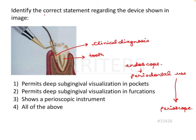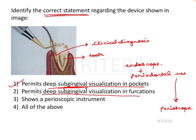Now let's see the options — what are the correct statements? Option one: it permits deep sub-gingival visualisation in pockets. In the image itself they are visualising the pocket sub-gingivally, so this is definitely correct. Option two: permits deep sub-gingival visualisation in furcation. If this were a multi-rooted tooth and the furcation was in that region, we can visualise it with this tip — so this is also correct.